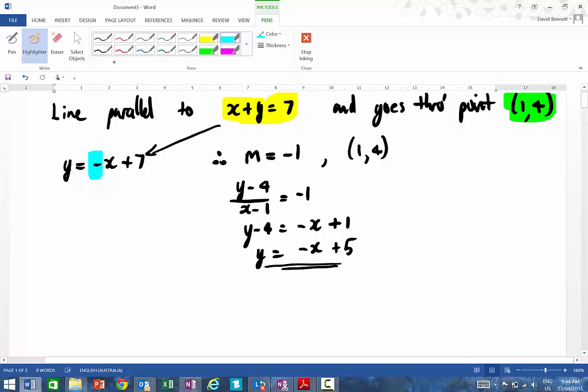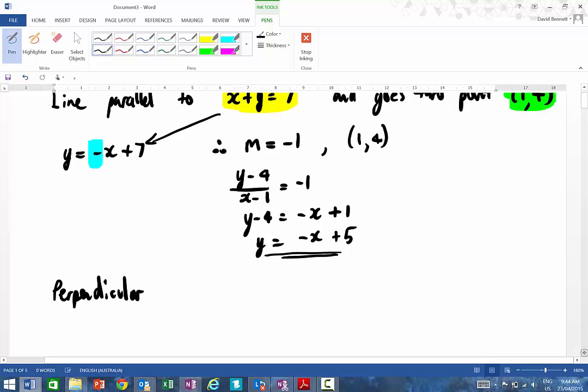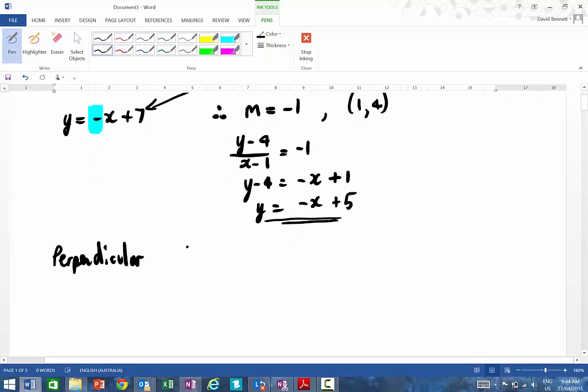So when we now look at the idea of perpendicular, obviously perpendicular cuts at right angles, doesn't it? 90 degrees. So perpendicular to the line y equals 2 thirds x plus 7 and goes through the point, say (5, 7).